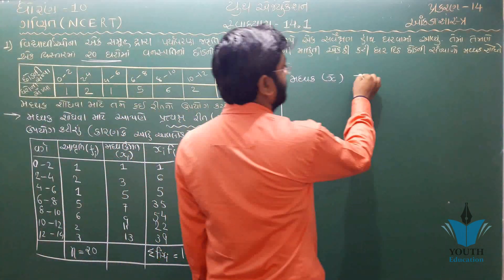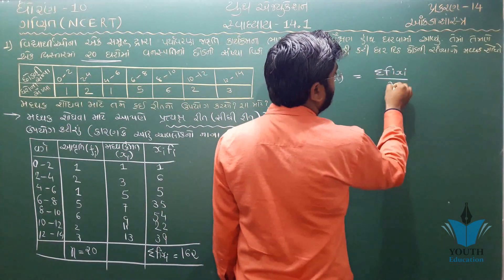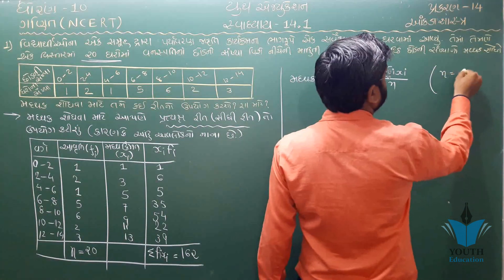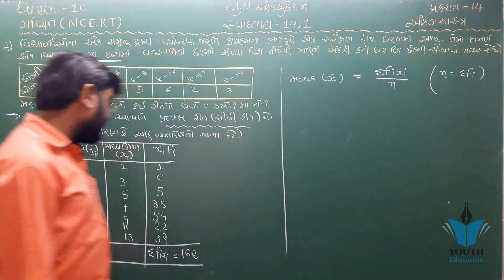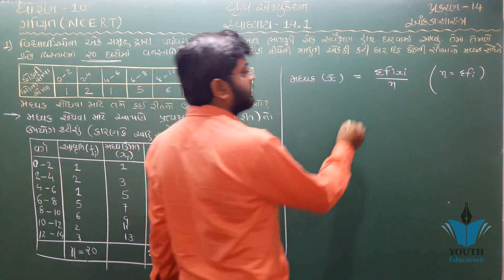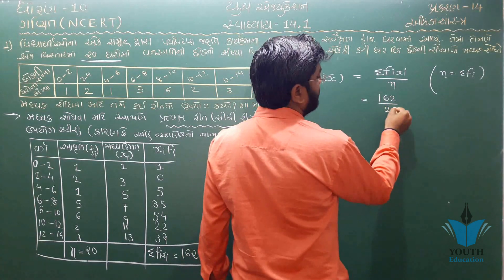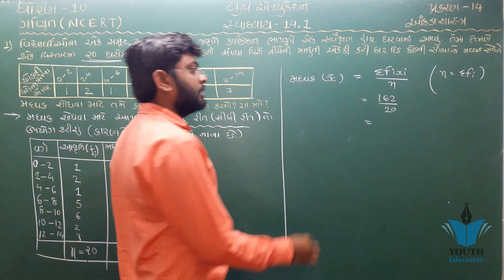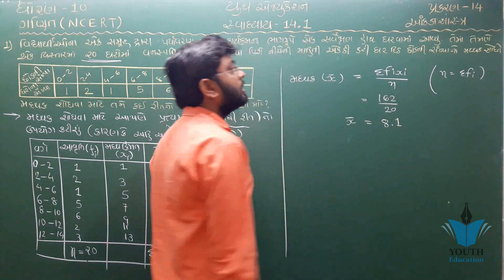તેનું સૂત્ર છે: x̄ = (Σ f·xᵢ) / N, એટલે કે આવૃત્તિ (f) અને xᵢ ના ગુણાકારનો સરવાળો, છેદમાં N (કુલ આવૃત્તિઓ નો સરવાળો Σfᵢ). આ સૂત્ર વડે આપણને મધ્યક મળે.